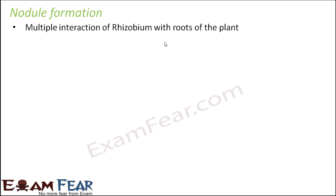One important point to note is that one rhizobium can infect only certain species of legumes — it is not that a rhizobium can connect with any leguminous plant. For example, the plant pea can be infected by rhizobium, but clover cannot be infected by the same rhizobium. So even though pea and clover are both leguminous plants, the bacteria rhizobium cannot connect to all types of legumes.